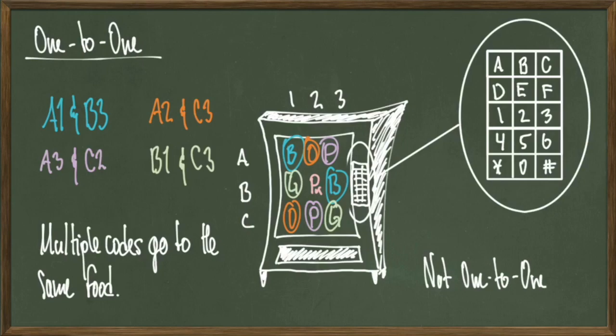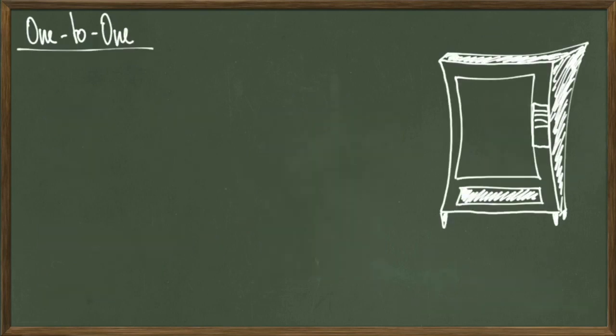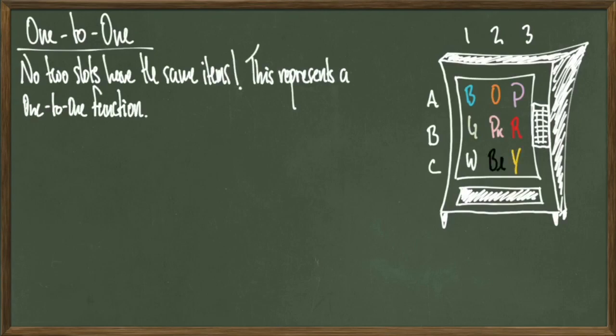Basically, a function is not 1 to 1 if two separate inputs give me the same output. Again, since the separate codes A1 and B3 both give me the blue item, this function cannot be 1 to 1 because I don't have uniqueness here. So let's suppose that I alter my vending machine a little bit. I'm going to change the stock of this vending machine so that I have all distinct food items. Now we see that every slot of this vending machine has its own food item, and no two slots share the same food.